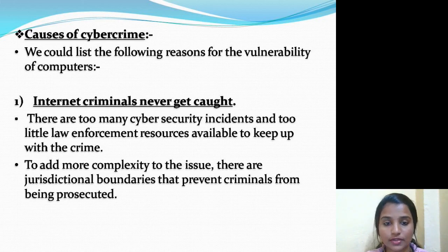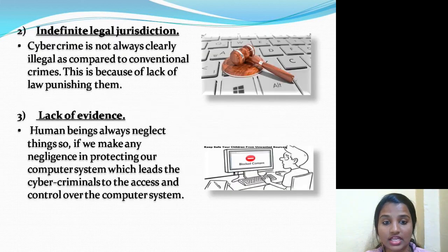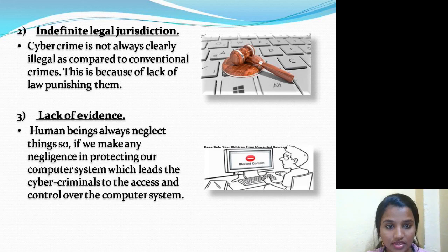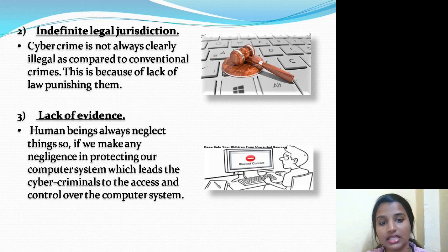There are also jurisdictional boundaries that prevent criminals from being prosecuted. The second reason is indefinite illegal jurisdiction. Cyber crimes can be committed in a jurisdiction without the criminals being physically present in it — it knows no geographical limitations, boundaries, or distances. So cyber crime is not always clearly illegal compared to conventional crimes.